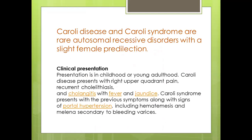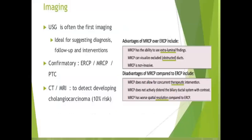Caroli disease and Caroli syndrome are rare autosomal recessive disorders with a slight female predilection, presenting in childhood or young adulthood. Caroli disease presents with right upper quadrant pain, recurrent cholelithiasis, and cholangitis with fever and jaundice. Caroli syndrome presents with those symptoms plus signs of portal hypertension, including hematemesis and splenomegaly secondary to bleeding varices. By imaging, ultrasound is often the first modality, ideal for suggesting diagnosis and follow-up. Confirmation is by ERCP, MRCP, or PTC. CT and MRI are used to detect the development of cholangiocarcinoma, which occurs in about 10% of cases.